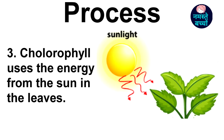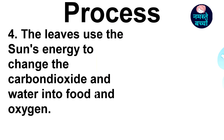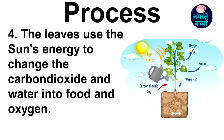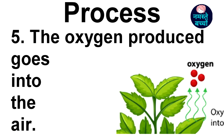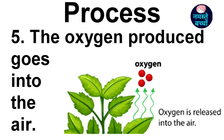Third, chlorophyll uses the energy from the sun in the leaves. Fourth, the leaves use the sun's energy to change the carbon dioxide and water into food and oxygen. Fifth, the oxygen produced goes into the air.